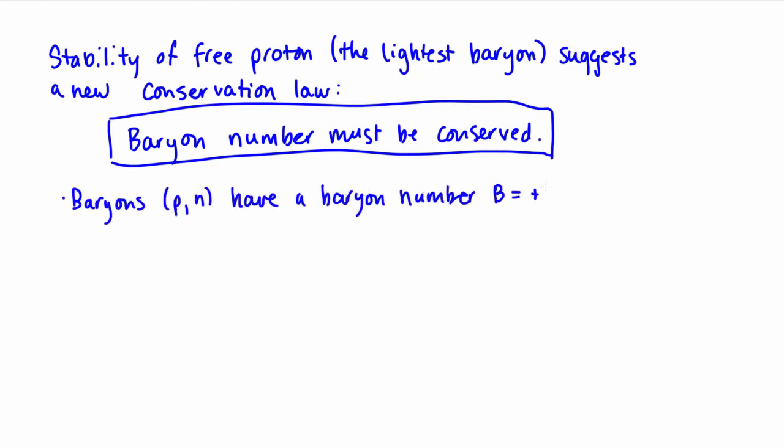Baryons are assigned a quantum number of B equals plus 1, and antibaryons are assigned a quantum number of B equals minus 1. How about mesons? Remember, these are hadrons that are also bosons, so with integer spin.